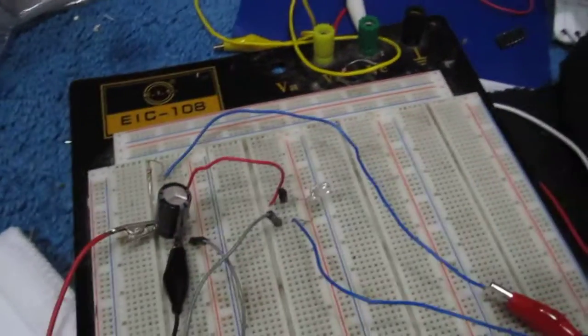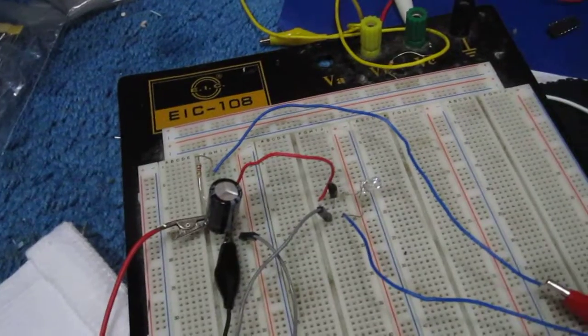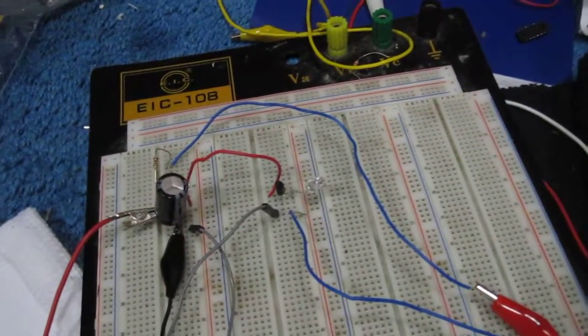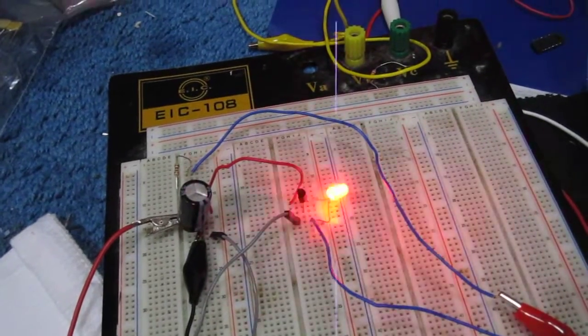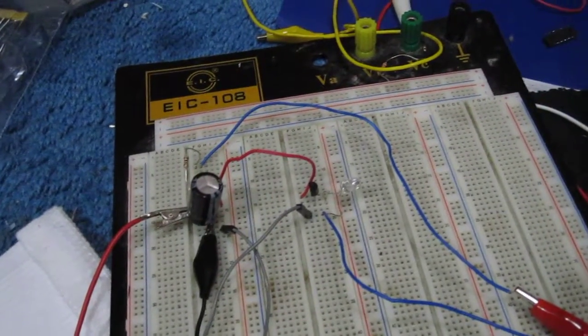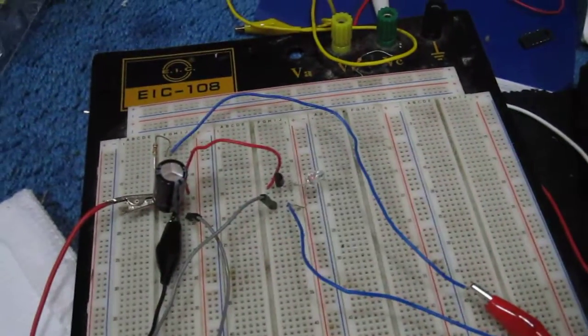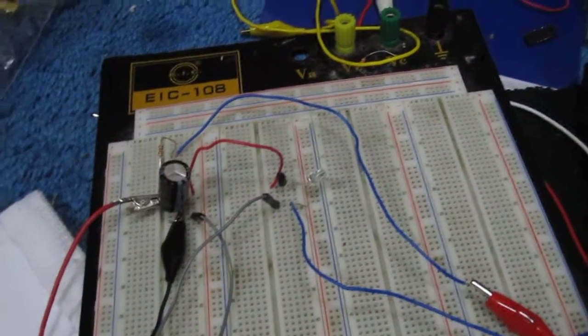This is how a relaxation oscillator circuit can be built using an NPN transistor. To see the full detailed explanation of the circuit including the schematic diagram, you can click the link below. Thanks for watching.